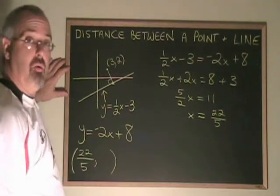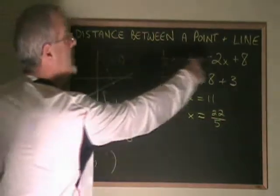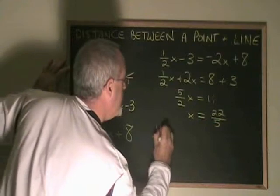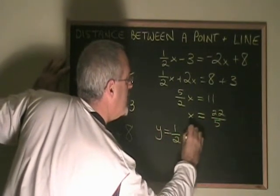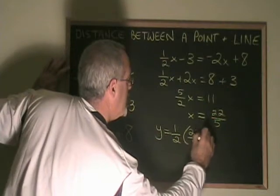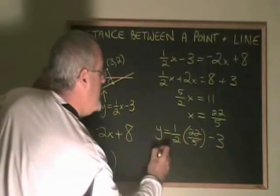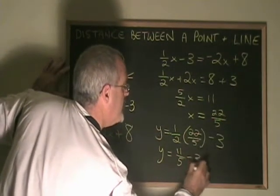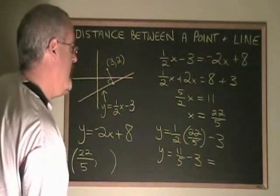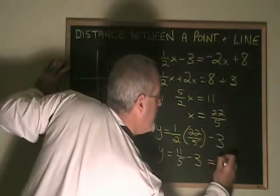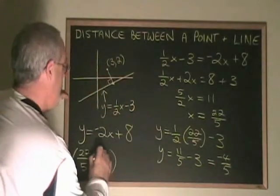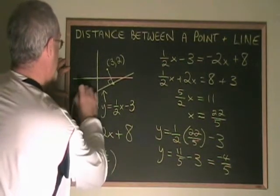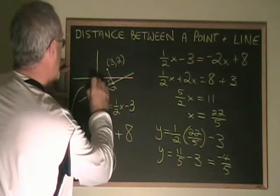What is the y coordinate? I will plug x equals 22 fifths into one of the original equations. Let's try y equals 1 half x minus 3. We get y equals 11 fifths minus 3, which is equal to 11 fifths minus 15 fifths. It's negative 4 fifths. We write negative 4 fifths here.